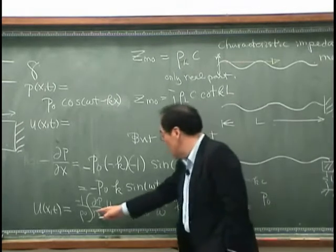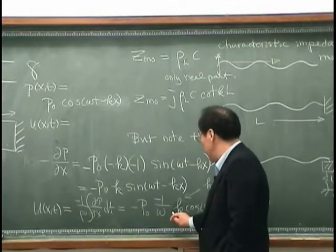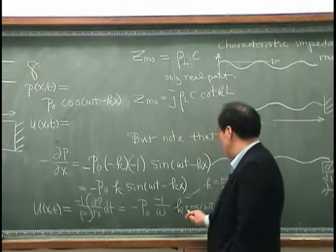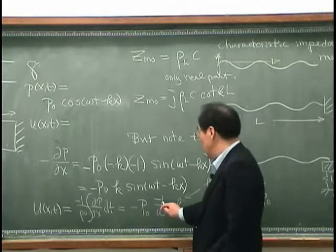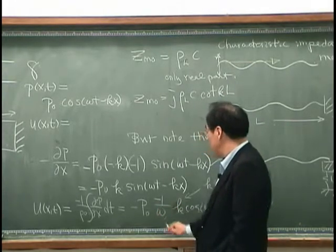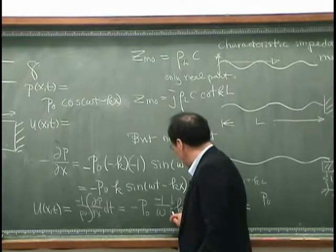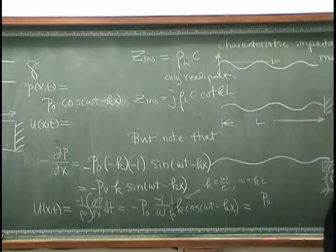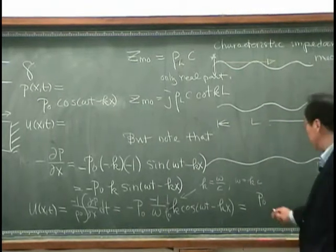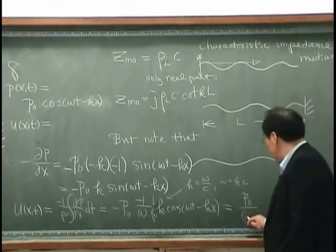Here is rho zero. I have to put 1 over rho zero over here, so what I have is P0 over rho zero C.